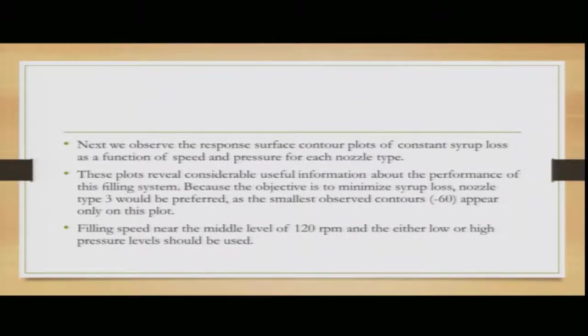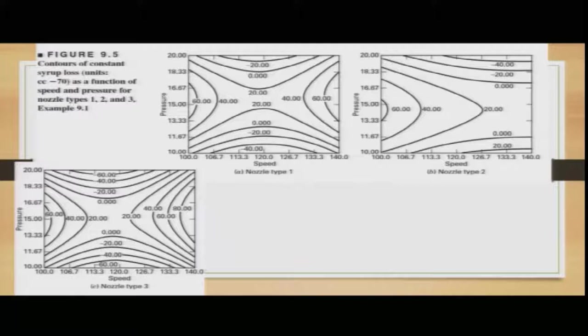Continuing: the objective is to minimize syrup loss due to frothing. Nozzle type 3 would be preferred, as the smallest observed contours of minus 60 appear only in that plot. Filling speed near the middle level of 120 rpm, and either low or high pressure levels, should be used to minimize frothing or syrup loss. The contours of constant syrup loss in cubic centimeters are given as a function of speed and pressure for nozzle types 1, 2, and 3.